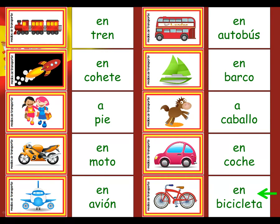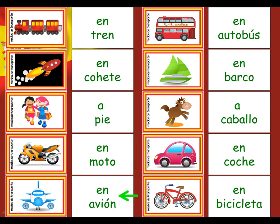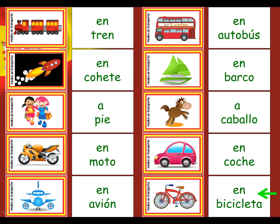Let's practise the words one more time. Escuchad y repetid. En tren. En cohete. A pie. En moto. En avión. En autobús. En barco. A caballo. En coche. En bicicleta.